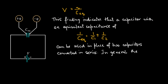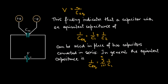In general, the equivalent capacitance is given by 1 over C_equivalent equals 1 over C1 plus 1 over C2 plus 1 over C3 and so on, which can be written in short as the summation of 1 over C_i for i going from 1 to N, for any number of series capacitors.